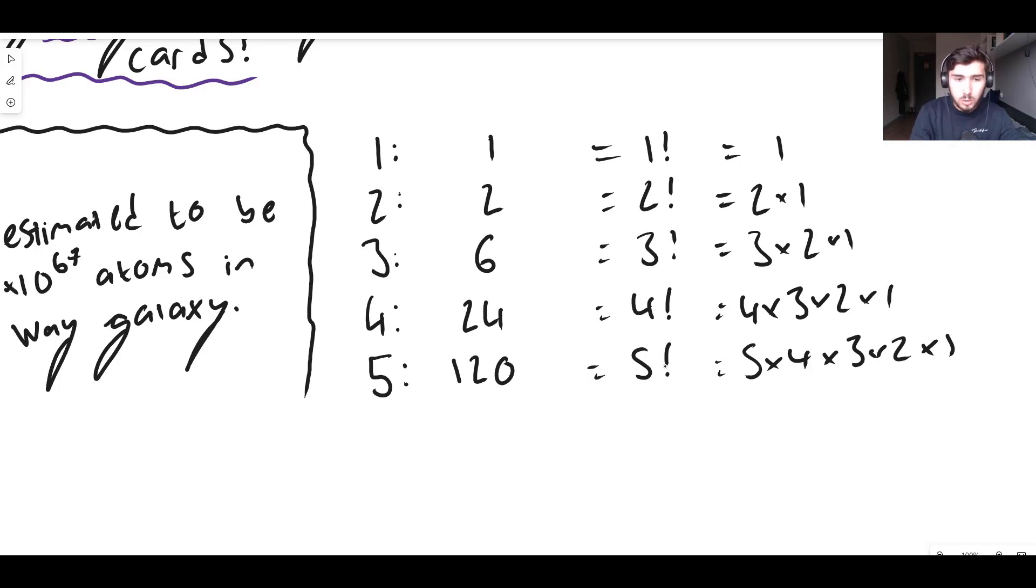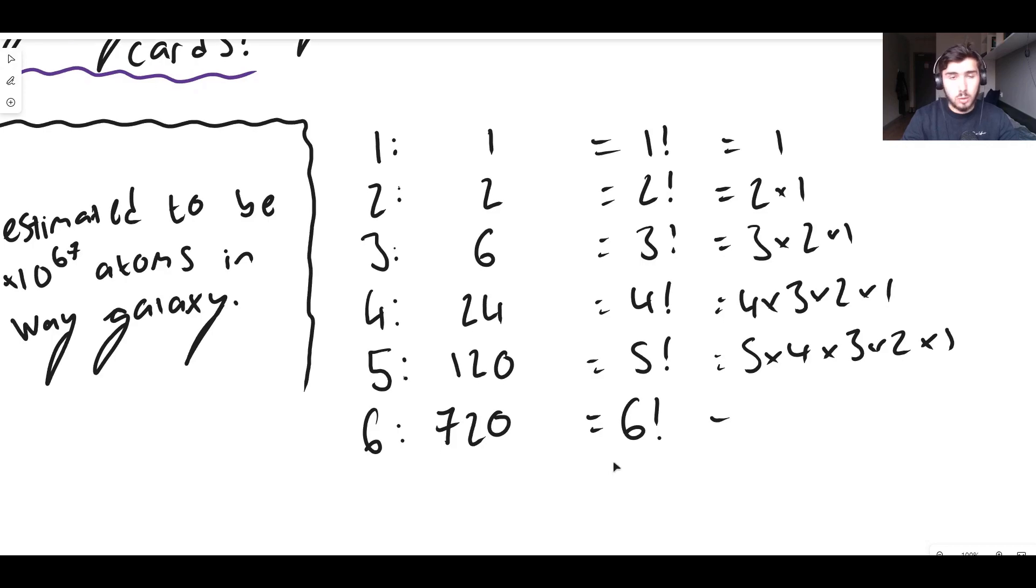So for example if we had 6 objects you could say well I actually know how to do this. This is 720 because with 6 objects you have 6 factorial different ways to order them. And of course that's equal to 6 times 5 times 4 times 3 times 2 times 1. You get the idea.